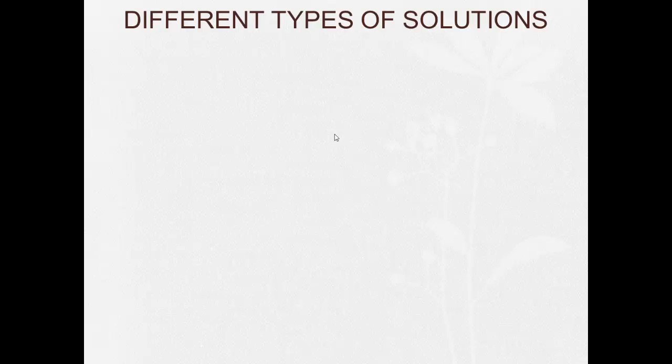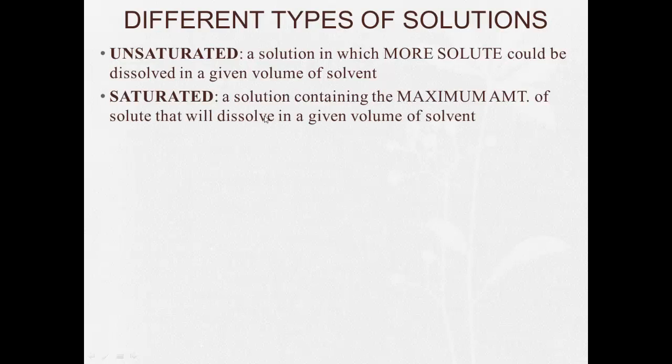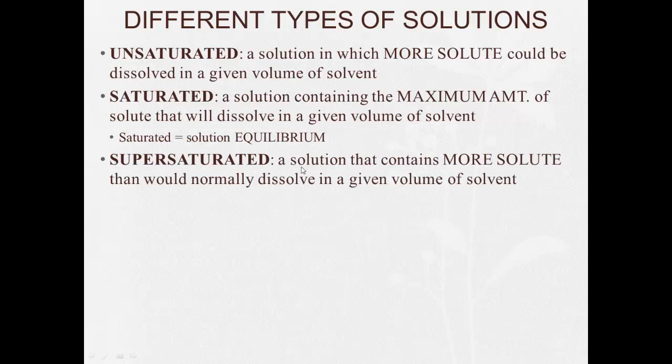So there's different types of solutions. And by types of solutions, I mean the terms we're going to use to describe them. Unsaturated, a solution in which more solute could be dissolved in a given volume of solvent. Saturated is a solution containing the maximum amount of solute that will dissolve in a given volume of solvent. So saturated, the solution is said to be at equilibrium. The other one is supersaturated, a solution that contains more solute than would normally dissolve in a given volume of solvent.